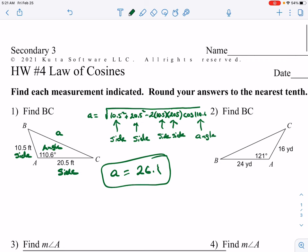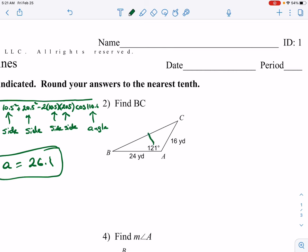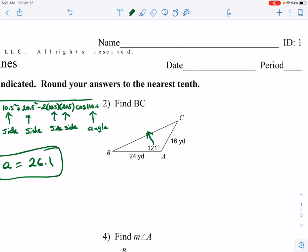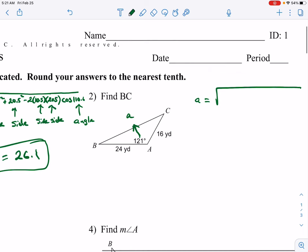Okay, again, we use this when it's side, angle, side. We use it to find the side that's across from the angle. So on this next example, we would have a big long square root, little a. A is equal to 24 squared plus 16 squared minus 2 times 24 times 16 cosine of 121.